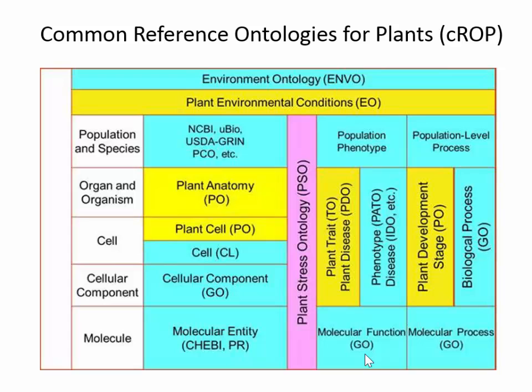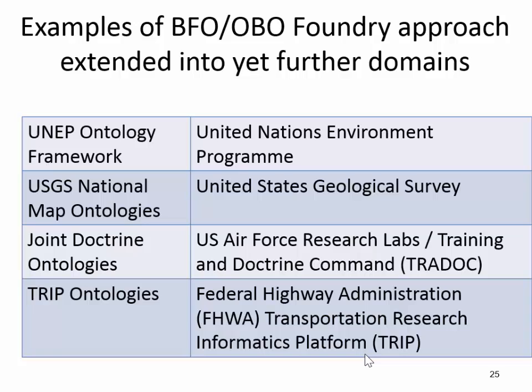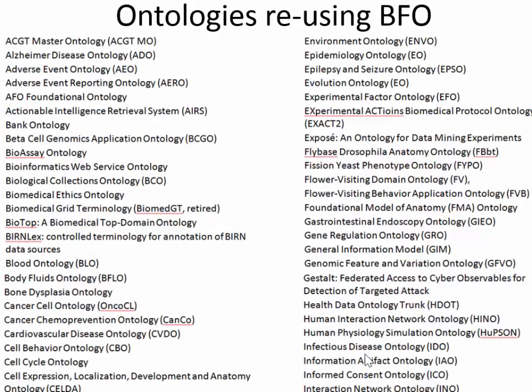The whole thing is being expanded much further. The United Nations is creating an ontology suite modeled on the OBO Foundry. The United States Geological Survey has just embraced this idea, and the army — indeed NATO in principle — has embraced the idea. The Federal Highway Administration is working on a suite of ontologies using the same methodology. All of these efforts reuse BFO as the domain-neutral core. There are now more than 150 ontology groups using BFO, and you can find this list on the BFO website.